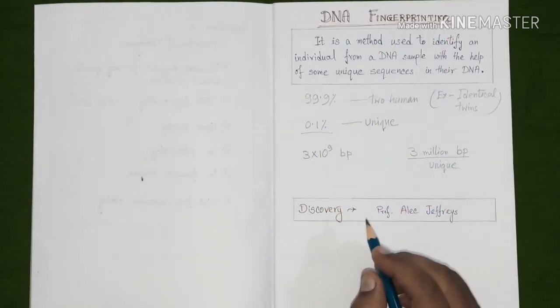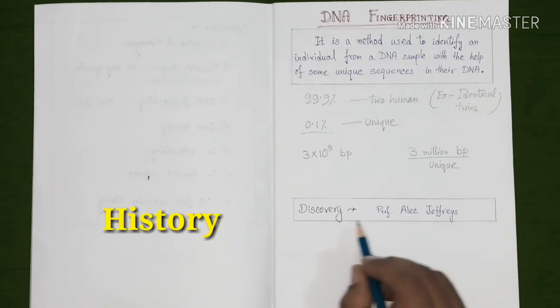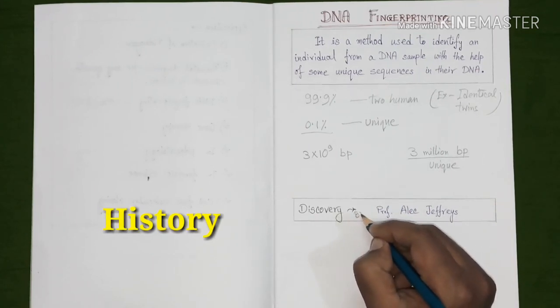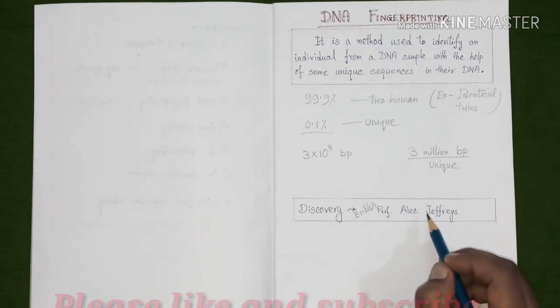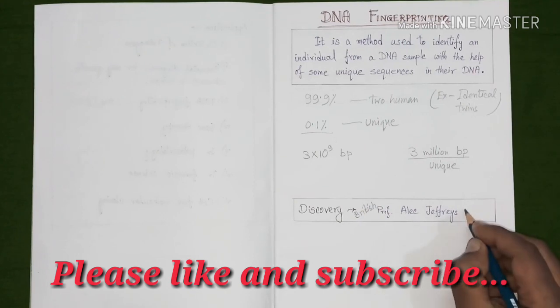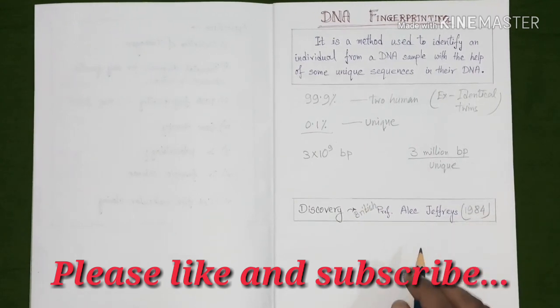Now let's know about the history of this process. Who discovered this process? This process was discovered by British scientist Professor Alec Jeffrey. He discovered this process in the year of 1984.